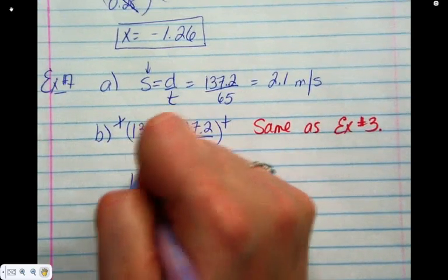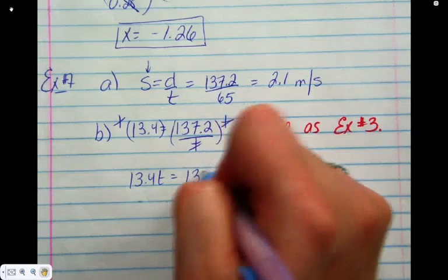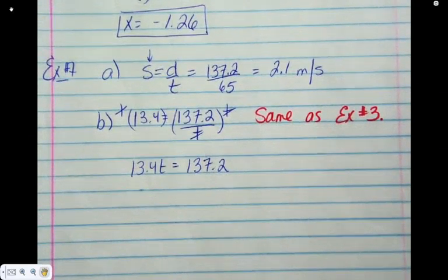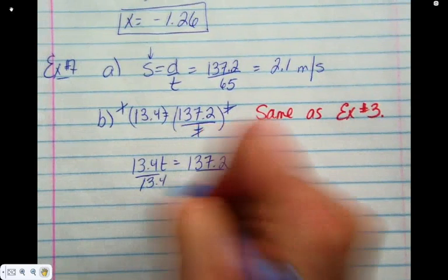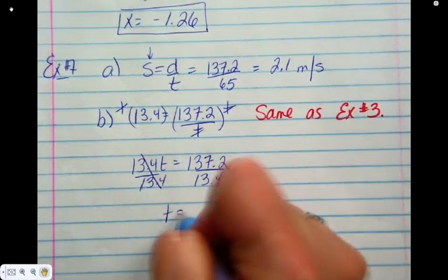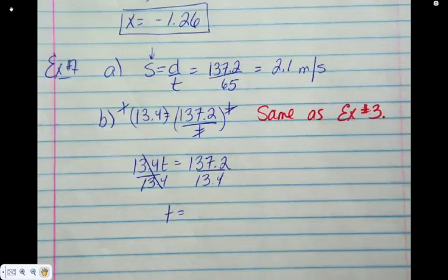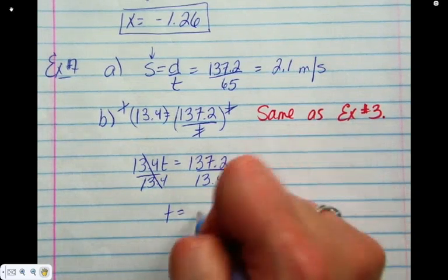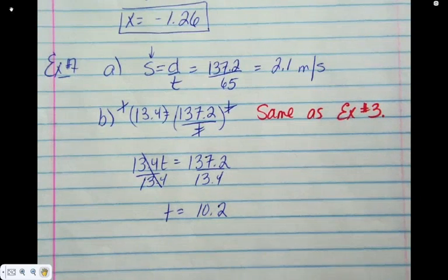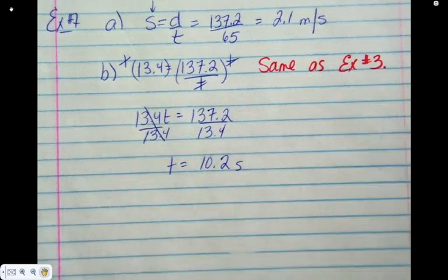So on the left, I have 13.4 T. What about on the right? Now how do I get rid of the 13.4? If we round to one decimal place, 10.2. Confirmed. Units. Time. Seconds. There we go.